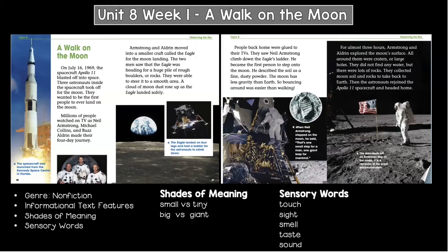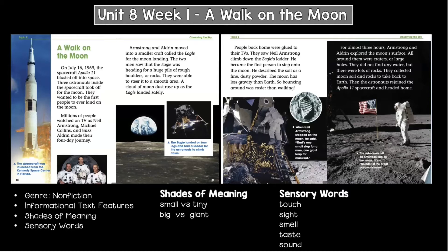Today we are going to be talking about some important parts of this story. We are going to be talking about the genre — what kind of story was this — we're going to be talking about informational text features, shades of meaning, and sensory words. I'm sure you know that this story is a true story; it really happened.